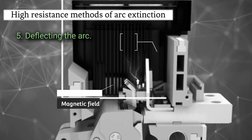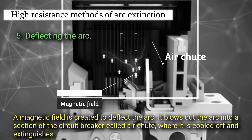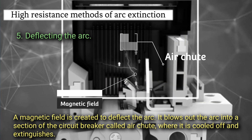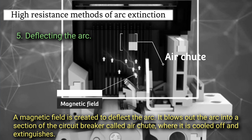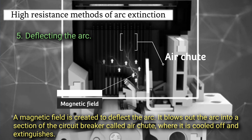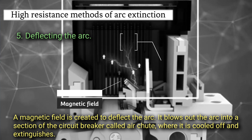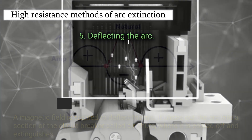Deflecting the arc. A magnetic field is created to deflect the arc. It blows out the arc into a section of the circuit breaker called the air chute, where it is cooled off and extinguished.